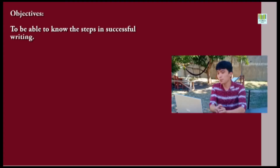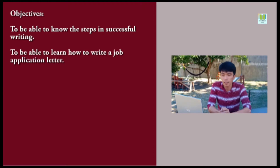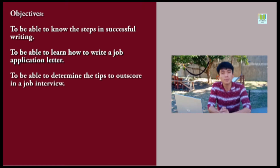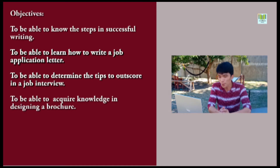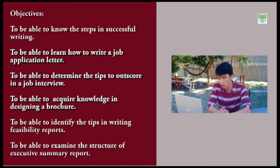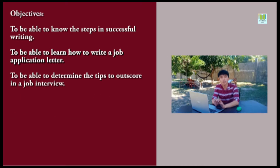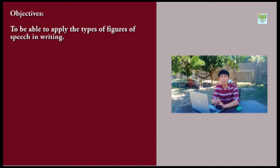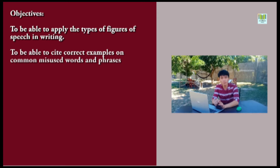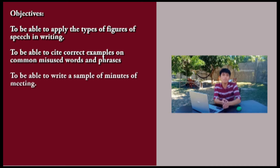Objectives: Number one, to be able to know the steps in successful writing. Second, to be able to learn how to write a job application letter, and to be able to determine the tips to outscore in a job interview. We also have to be able to acquire knowledge in designing a brochure, to be able to identify the tips in writing visibility reports, to be able to examine the structure of executive summary report, and to be able to apply the types of figures of speech in writing. To be able to cite correct examples on common misused words and phrases, and finally, to be able to write a sample of minutes of meetings.